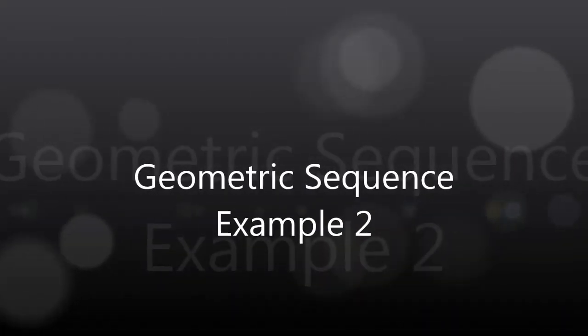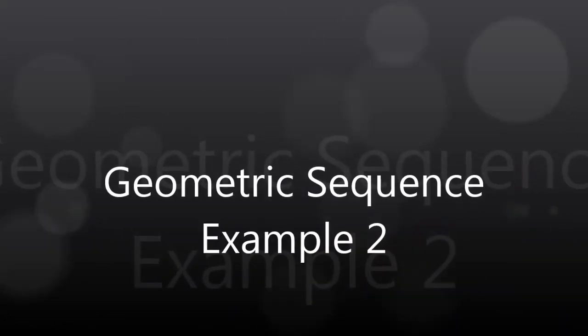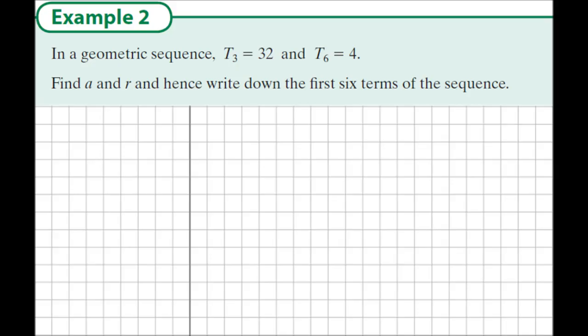In this example, it's a geometric sequence question for the Leaving Cert High-Level course. In a geometric sequence, term 3 is 32 and term 6 is 4. Find a and r and hence write down the first six terms of the sequence.